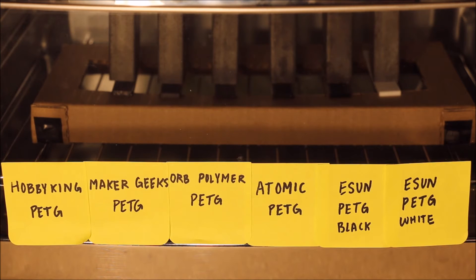This is the glass transition temperature test for six different PETG filaments for 3D printing. We have Hobby King PETG, Maker Geeks, Orb Polymer, Atomic, E-Sun in black and white to see if there's a difference in whether the color of the filament affects its glass transition temperature.